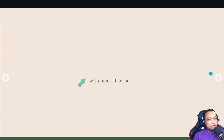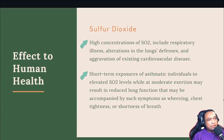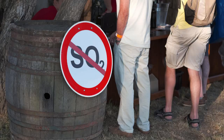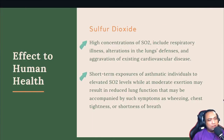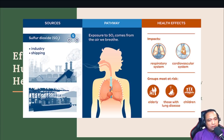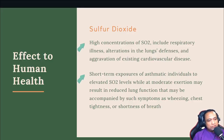Gas number four is sulfur dioxide. High concentrations of sulfur dioxide include respiratory illness, irritation of lung defenses, and aggravation of existing cardiovascular disease. Point two: short-term exposure for asthmatic individuals can reduce lung function, accompanied by symptoms of wheezing, chest tightness, and shortness of breath. All five gases in the exhaust emission are harmful to our respiratory system and we should avoid all types of these gases.